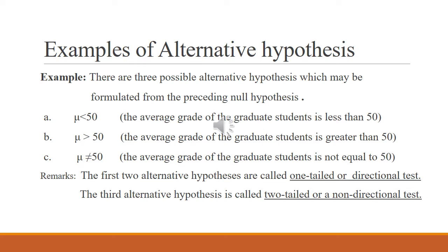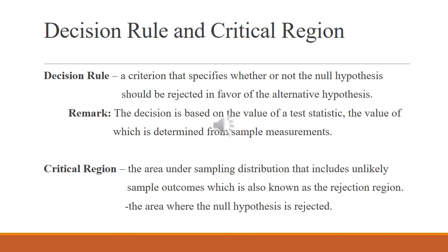The first two types of alternative hypothesis — mu greater than 50 or mu less than 50 — are called one-tailed or directional tests. The third alternative hypothesis, mu not equal to 50, is called a two-tailed or non-directional test. The decision rule is a criterion that specifies whether or not the null hypothesis should be rejected in favor of the alternative hypothesis.